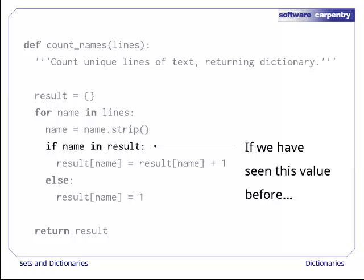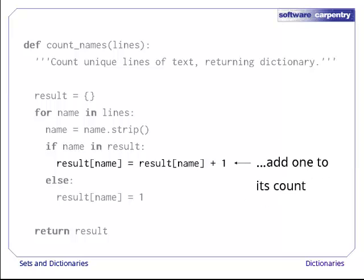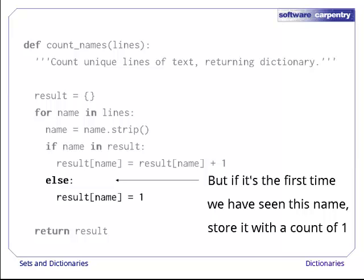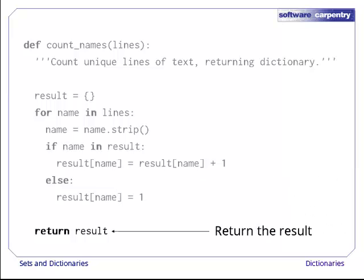After stripping off any leading or trailing white space as usual, we check to see if we've seen this bird name before. If we have, we add one to the associated count. If it's the first time we've seen this name, though, we add a new entry to the dictionary using the bird name as the key and one as the value. Finally, we return the dictionary we've created.